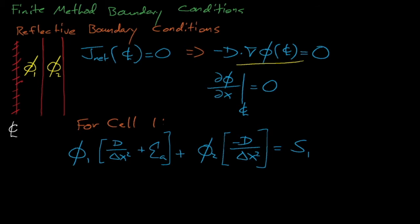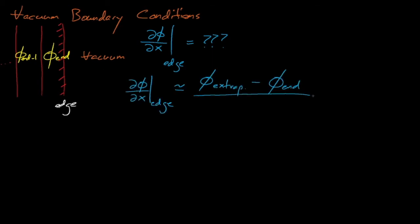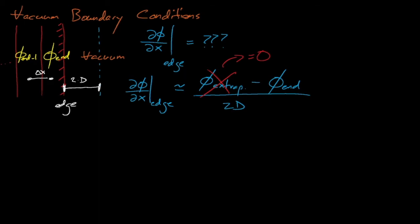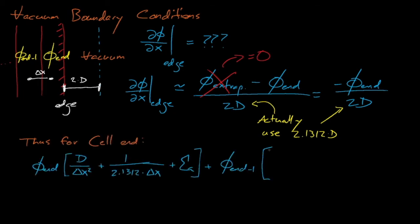Next, what happens at the outermost cell in the system? In this case, there is no phi I-plus-1 term available, so how can we compute the flux gradient at the outer boundary? The solution is to apply the extrapolated boundary condition, which assumes that the flux equals zero at some extrapolated distance — which equals two times the diffusion coefficient, or more accurately, 2.1312 times the diffusion coefficient. The gradient at the outer boundary is approximately equal to the flux at the extrapolated location, which equals zero, minus the flux in the last cell, all divided by the extrapolation distance, or two times the diffusion coefficient. By using the definition of the extrapolated boundary condition, our Laplacian and diffusion equation yield an expression which only depends on the flux in the last and in the second-to-last cells.